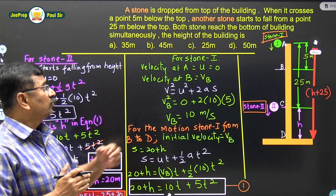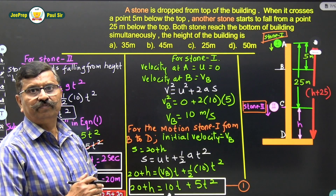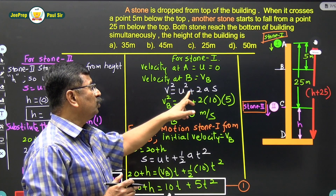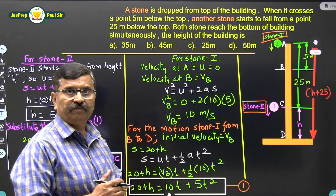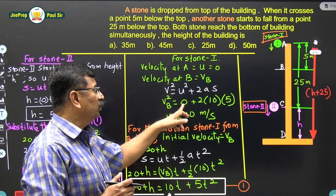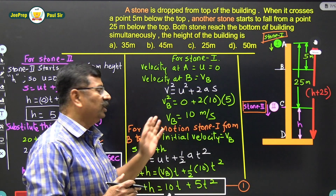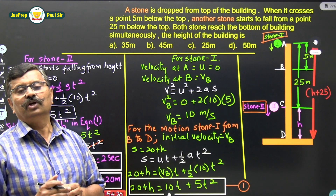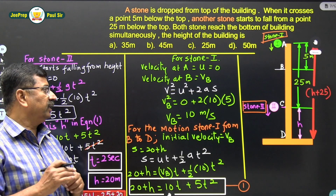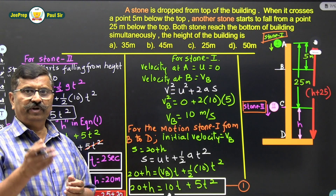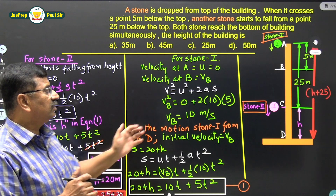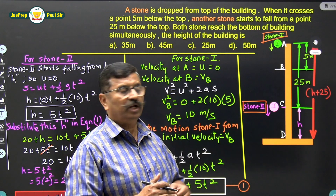For stone 1, it is released from the top so initial velocity u = 0. We find the velocity at point B using v² = u² + 2as. Since it is downward motion, acceleration is positive. So vB² = 0 + 2 × 10 × 5, giving vB = 10 m/s. When stone 1 reaches point B, its velocity is 10 m/s.